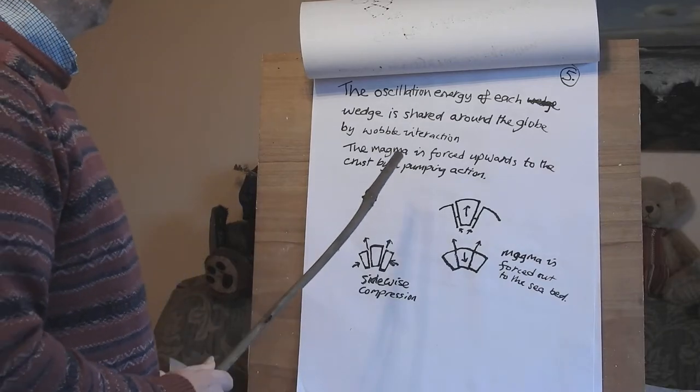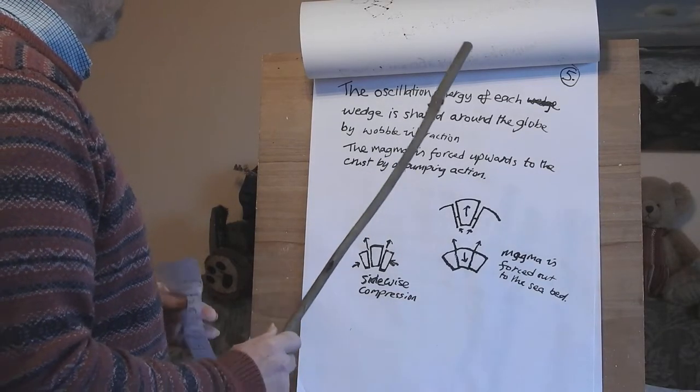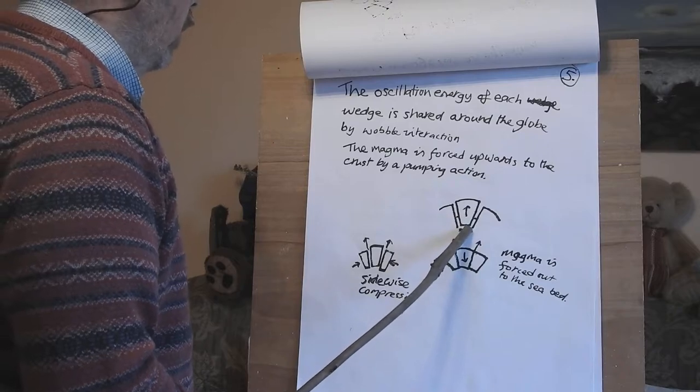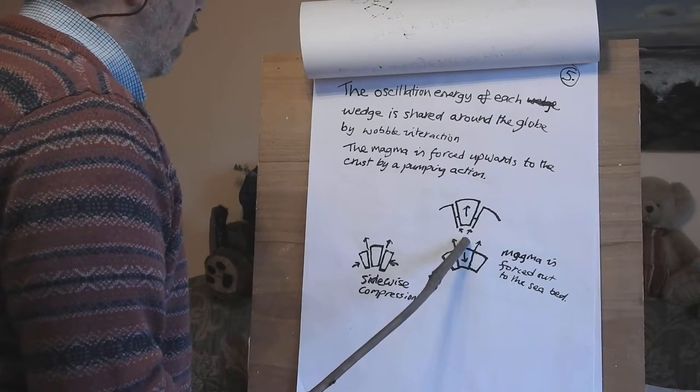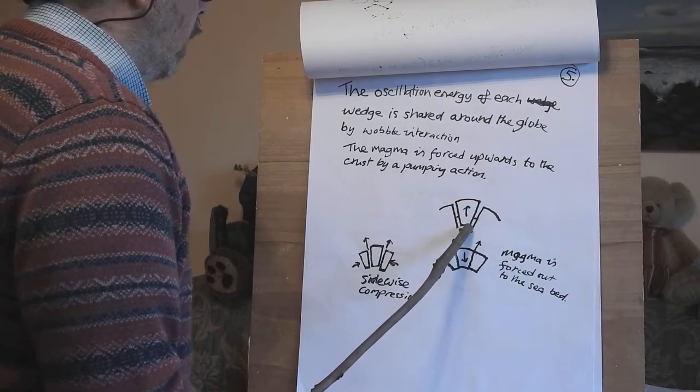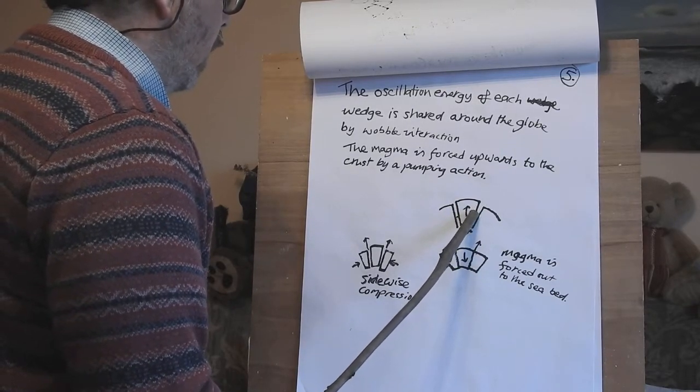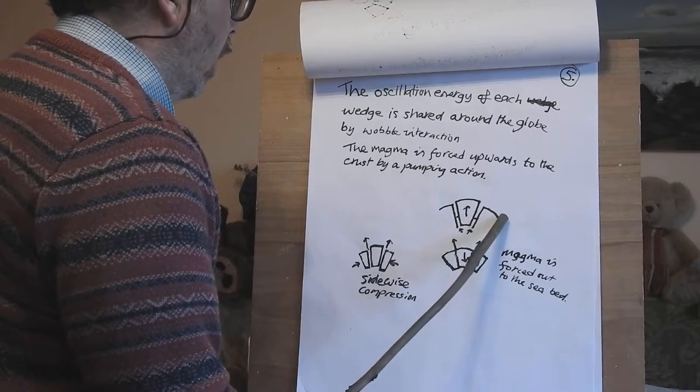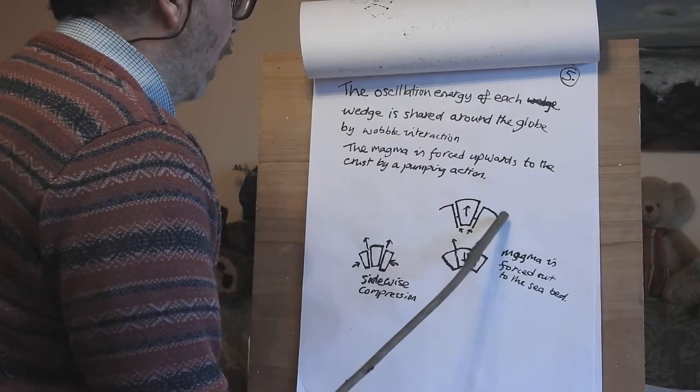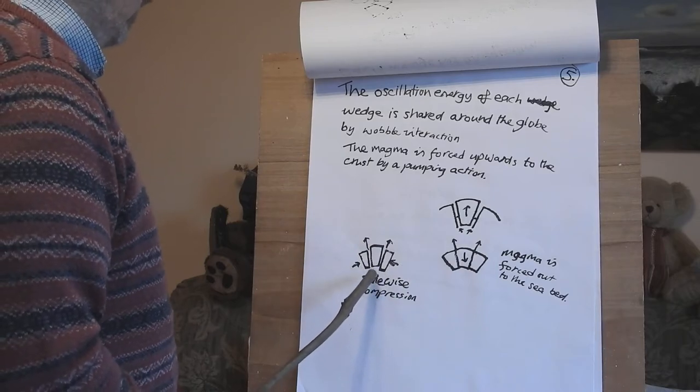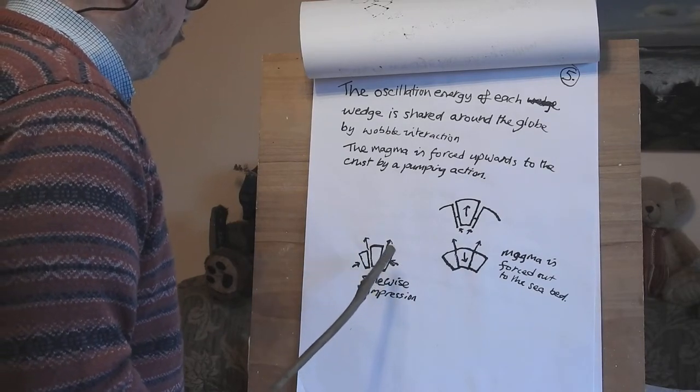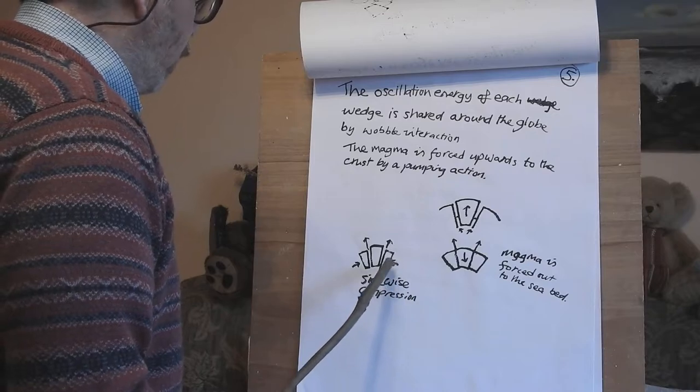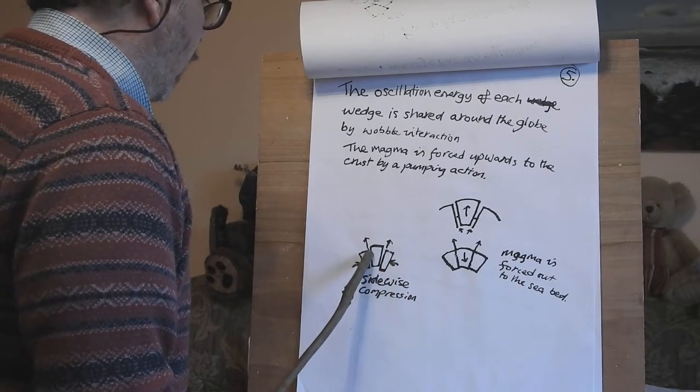The oscillation energy of each wedge is shared around the globe by wobble interaction. The magma is forced upwards to the crust by a pumping action. The wedge goes out and it sucks up this magma in the gap. When it forces itself down, the magma gets forced up to the seabed. Likewise you get sidewise compression when the compresses from both sides ejects the magma as well.